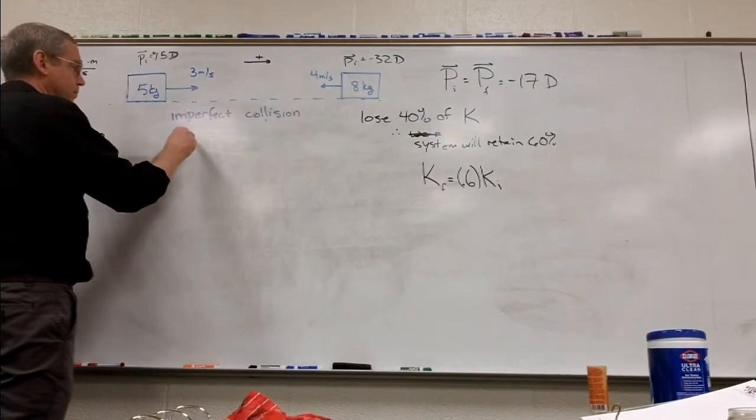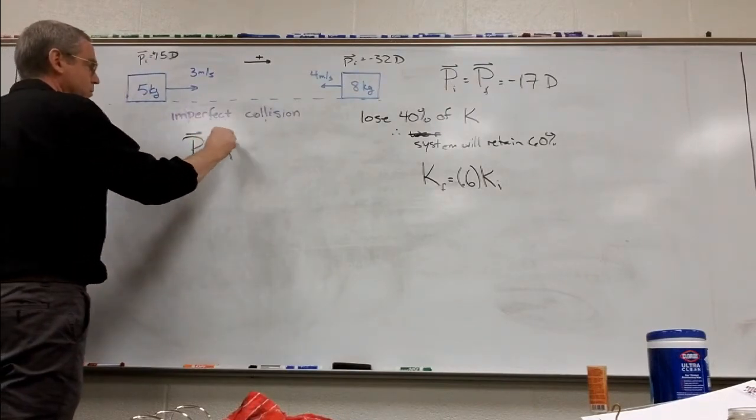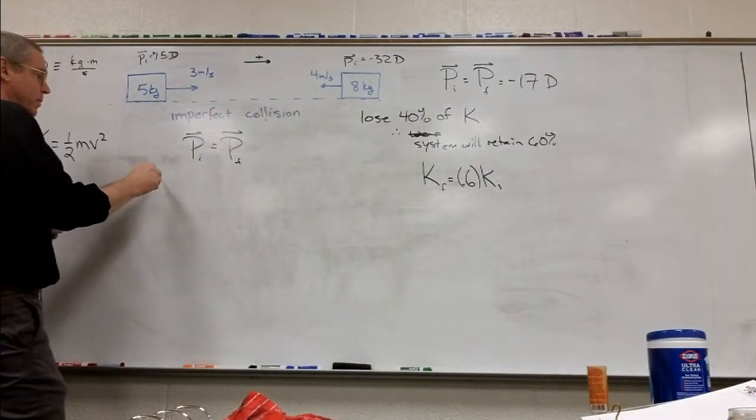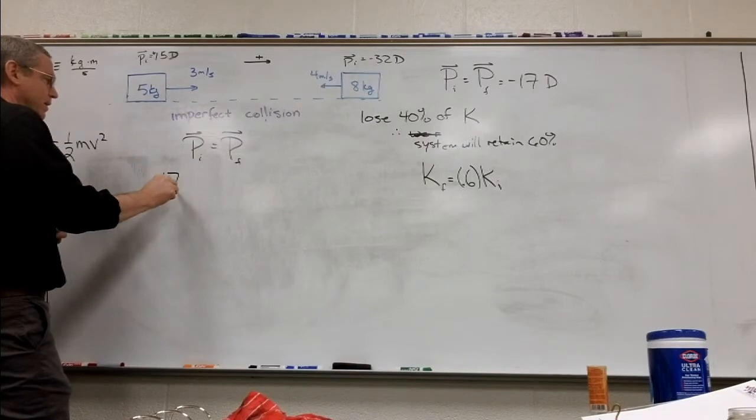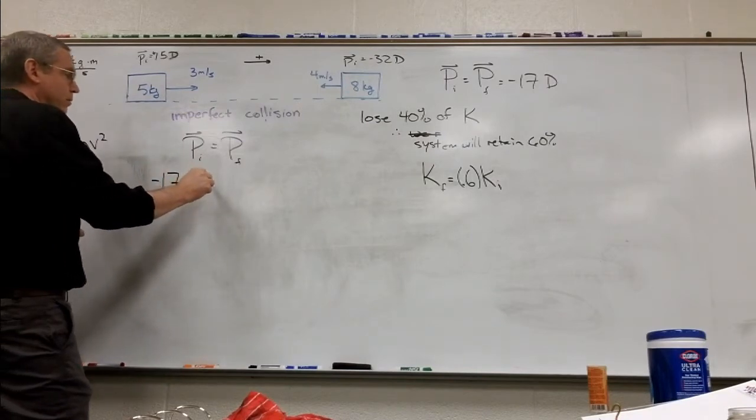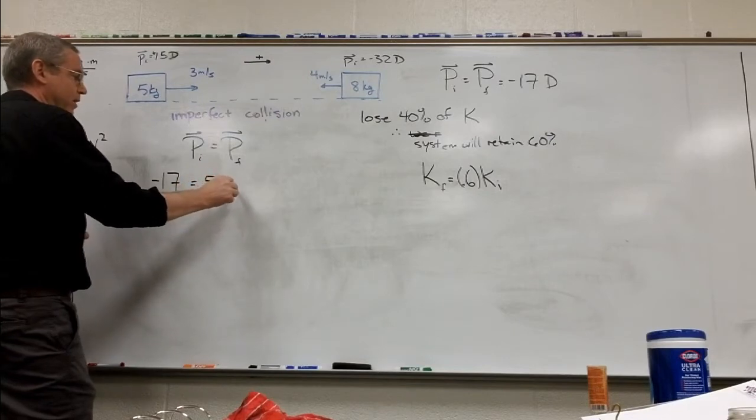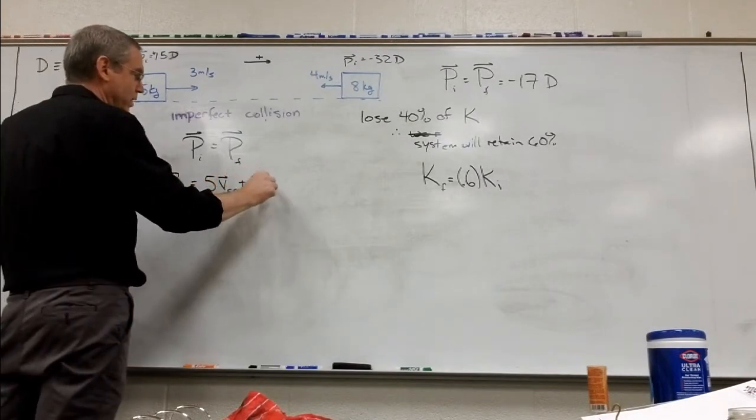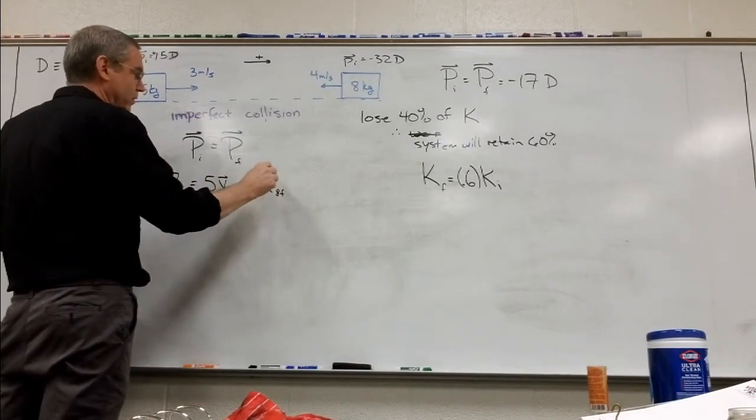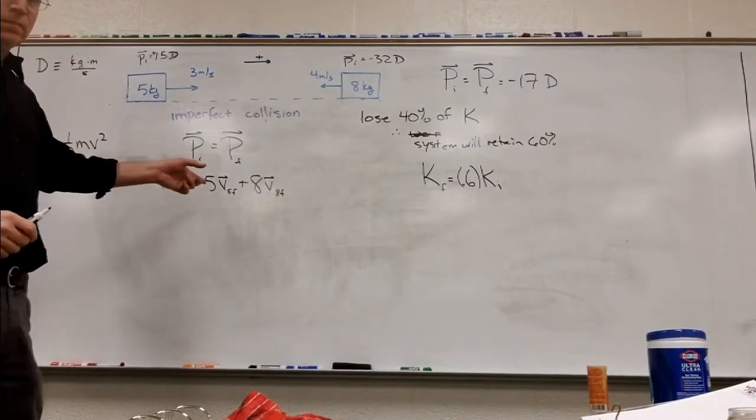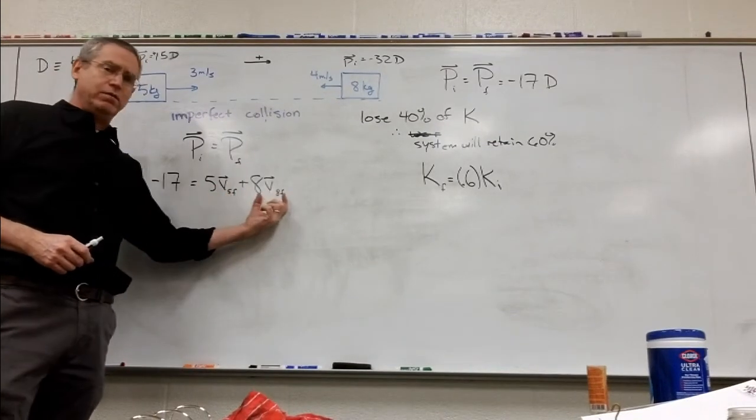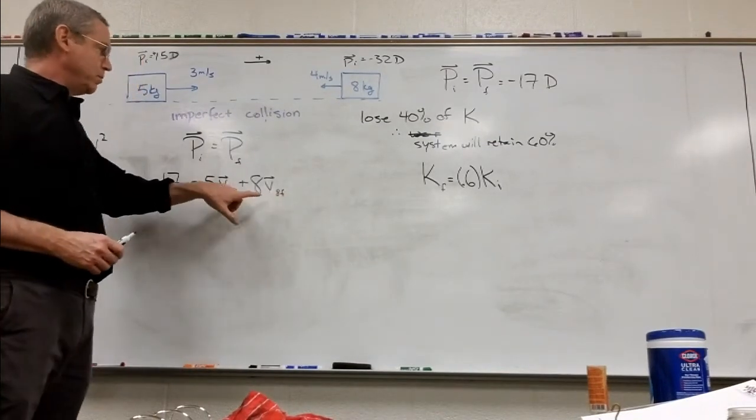So we're dealing with this right here. So I know that my total initial momentum is equal to my total final momentum. And so my total initial momentum, I already know that, that's negative 17. That's going to be equal to 5 times whatever my final velocity is for the 5 kilogram mass, plus 8 times whatever my final velocity is for the 8 kilogram mass. So this is my first equation right here. Again, my final momentum is just the sum of the individual momentums. And so combine them like that.